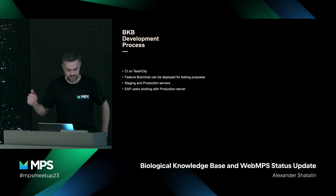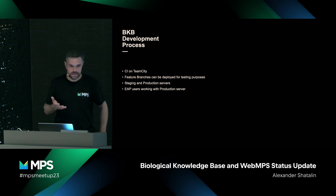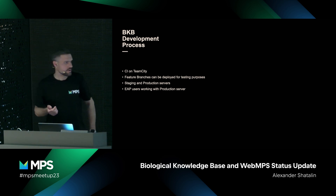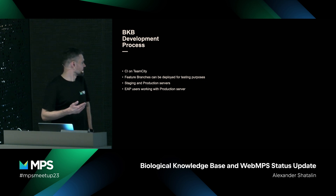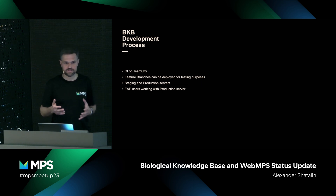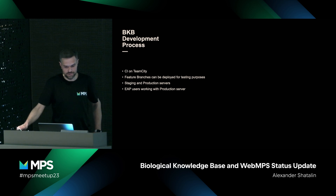A few words about our development process. We have continuous integration on TeamCity and feature branches — everything is developed in feature branches. Each feature branch can be deployed to the cloud in AWS to try and debug it. Once functionality is merged back to master, it can be propagated to the staging or development server to check integration of different subsystems. If everything is fine, we propagate the same build to the production server, where early access users edit documents.